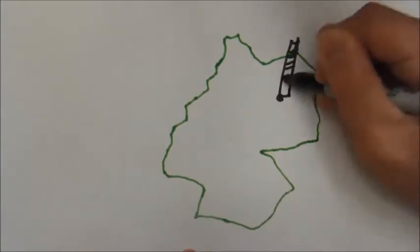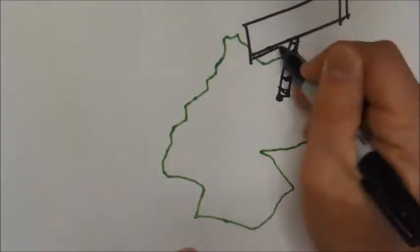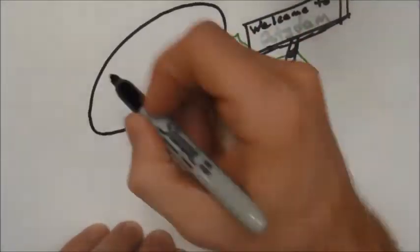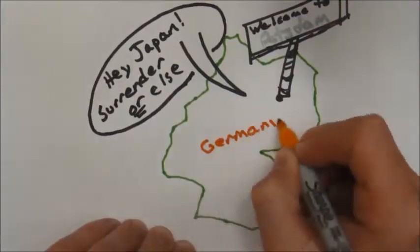The Allied countries met in Potsdam, Germany. It was here at the Potsdam Conference that they issued the Potsdam Declaration that asked the Japanese to surrender or face certain destruction.